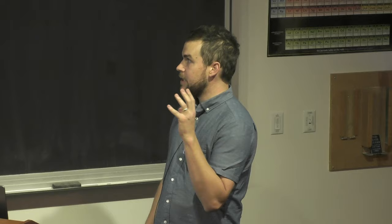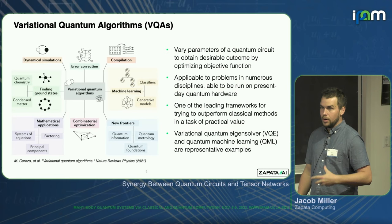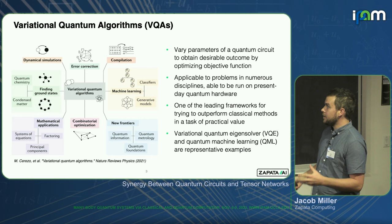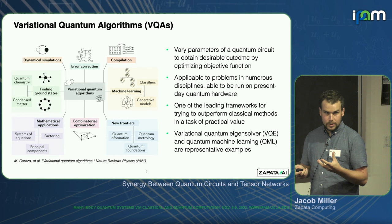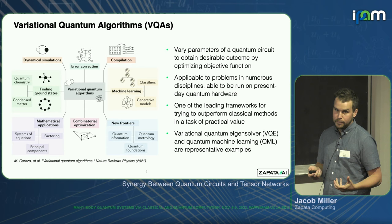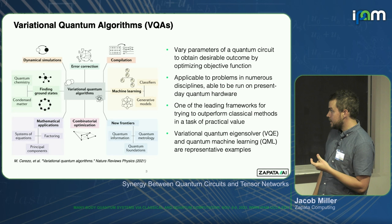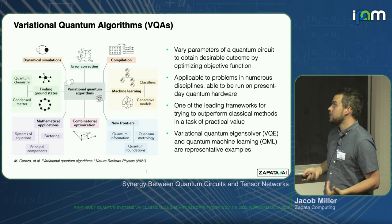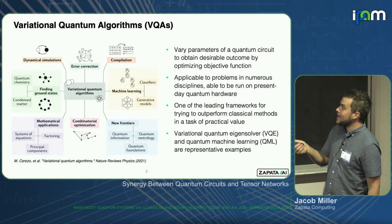Setting the background: everything I'm going to be talking about today is in the realm of variational quantum algorithms. In general, what these share in common is that they have a quantum circuit with parameters in it, and you vary the parameters to achieve some desirable performance in a task of interest. You do that by optimizing some objective function, where a low value corresponds to nice behavior in your task. There are a lot of different ways you can apply variational quantum algorithms.